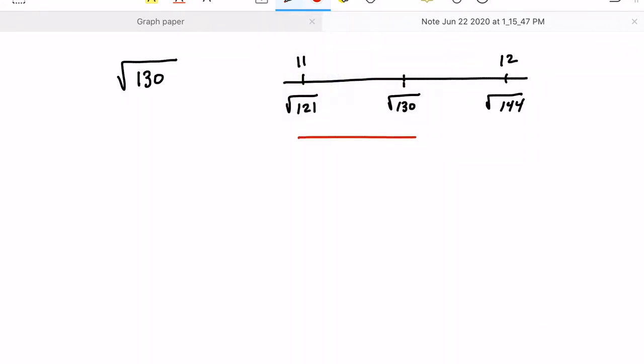Again, we'll find the distance between our two endpoints. That's 23. And the distance between 121 and 130 is 9. So our answer is going to be 11 and 9 twenty-thirds. That'd be about 11.4, which is really close to what the actual value is.